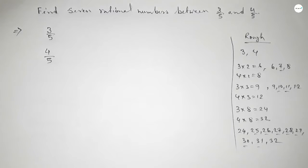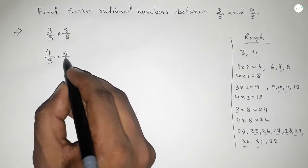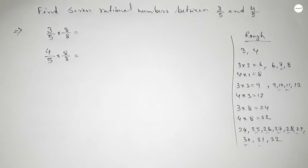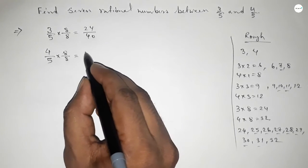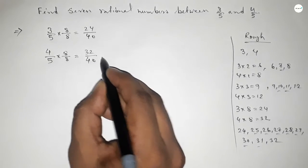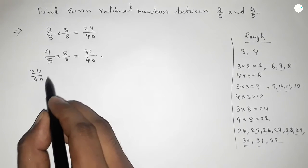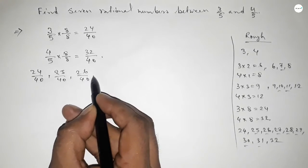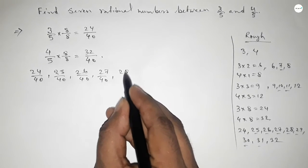So we multiply both the numerator and denominator by 8. This gives us 24 over 40 and 32 over 40. Between 24 and 32 there are 7 natural numbers, and from these natural numbers we can form 7 rational numbers.